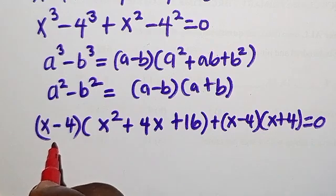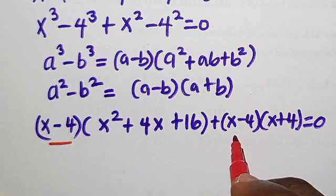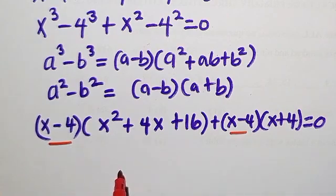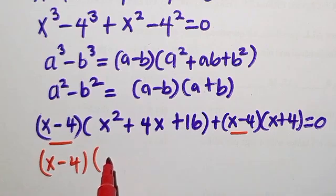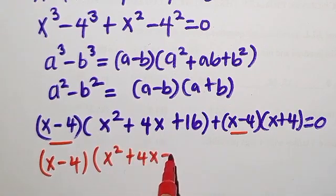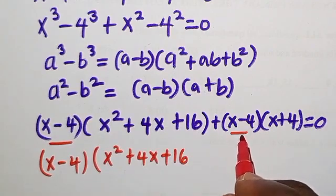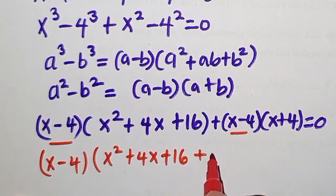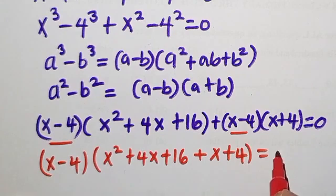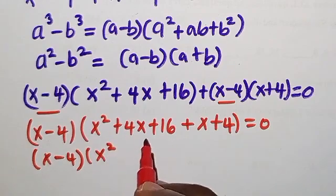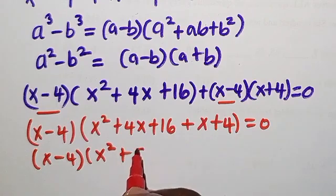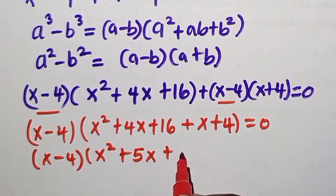We can see that (x - 4) is common in both terms, so we factor it out: (x - 4)[(x² + 4x + 16) + (x + 4)] = 0. Combining like terms inside the bracket: 4x + x = 5x, and 16 + 4 = 20, giving (x - 4)(x² + 5x + 20) = 0.